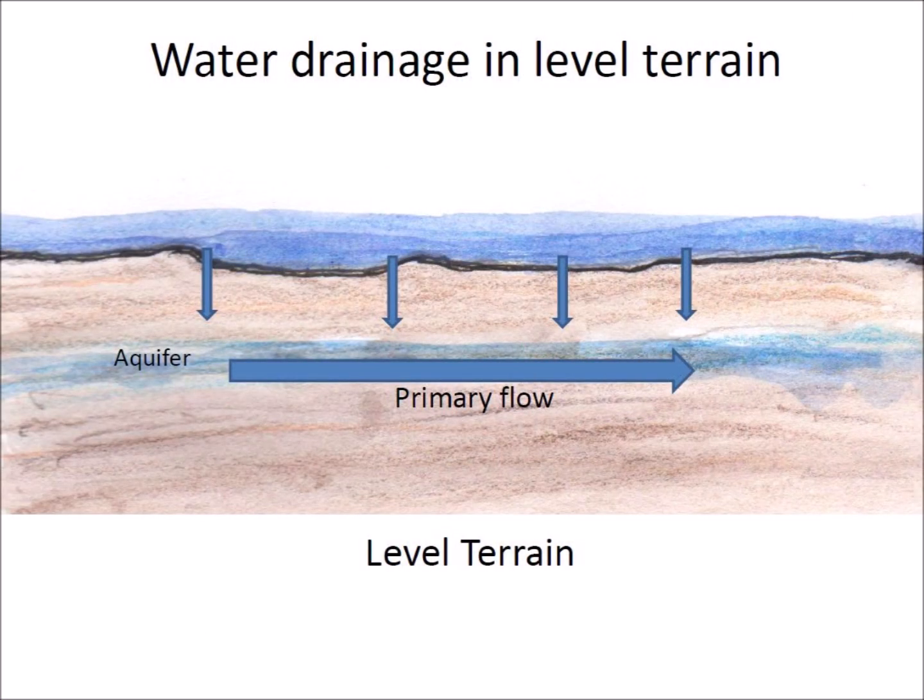The preservation of the Carolina Bays can be explained by the way in which water drains. In level terrain, rainwater cannot flow fast horizontally along the surface, so it percolates through the soil and flows toward lower terrain via underground aquifers that eventually lead to the ocean. The slow horizontal flow of water on the surface reduces erosion of the Carolina Bays features, especially if the terrain has grasses or other vegetation that stabilizes the soil.